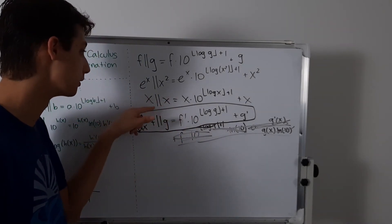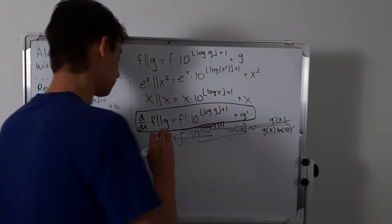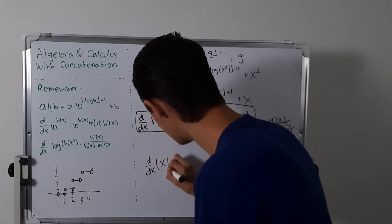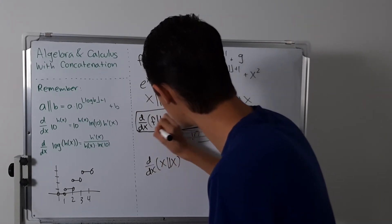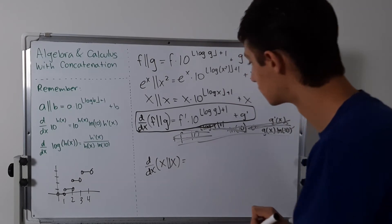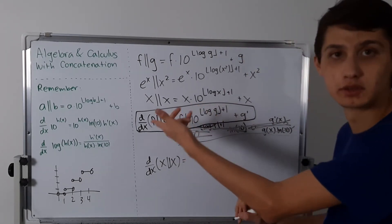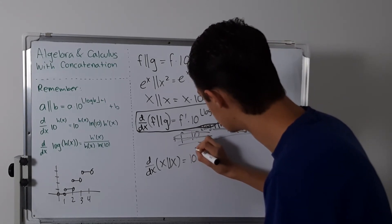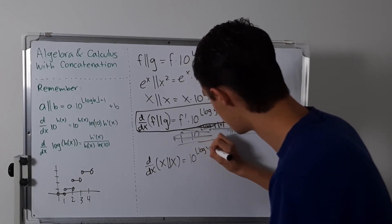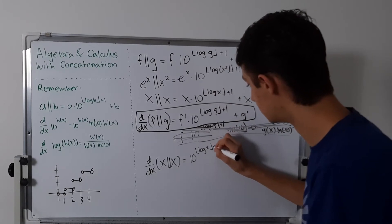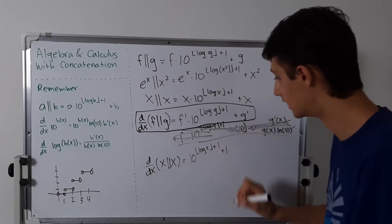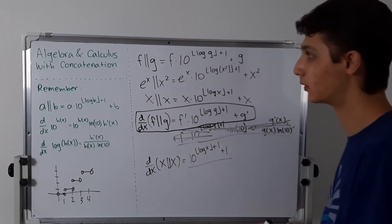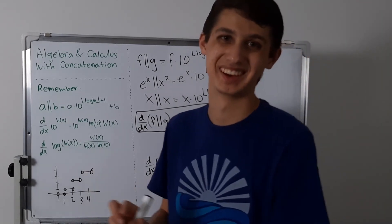So if we take the derivative of x concatenated with x, we just plug in here. f prime is just 1, so we have 1 times 10 to the floor of log of x plus 1, plus g prime which is also just 1. So the derivative of x concatenated with x is 10 to the floor of log of x plus 1, plus 1.